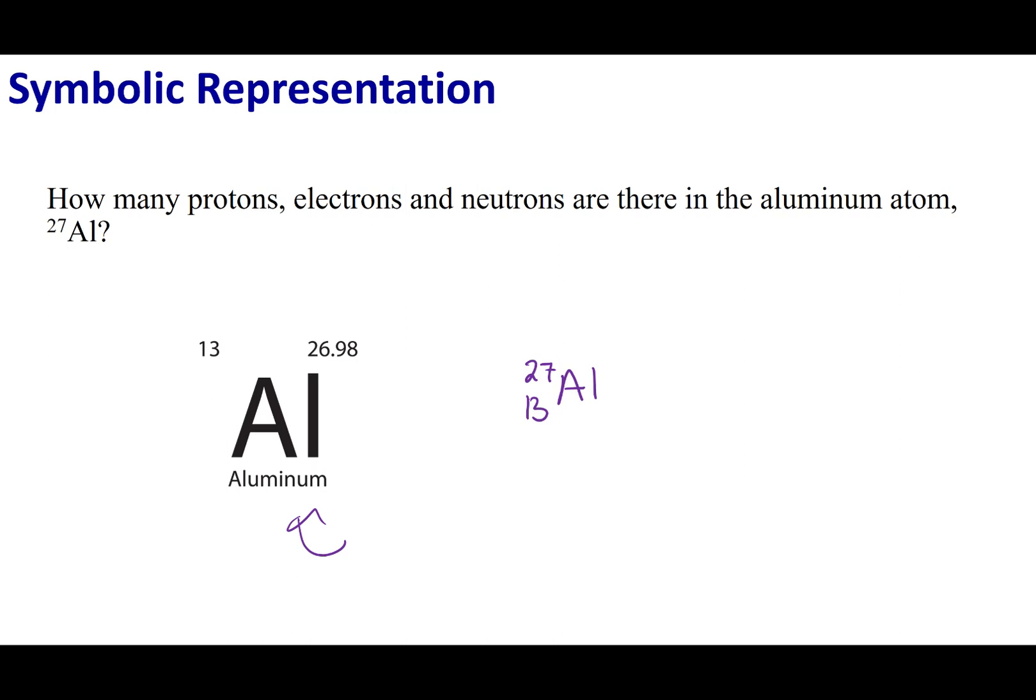Now, these are all going to tell me some things. The first thing that I told you guys is that atomic number on the bottom is going to tell you the number of protons. So, 13 means that there are 13 protons.